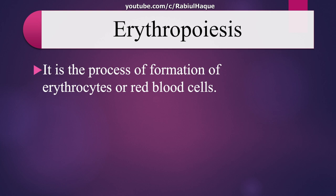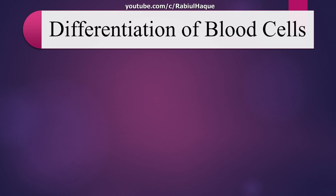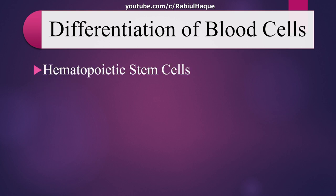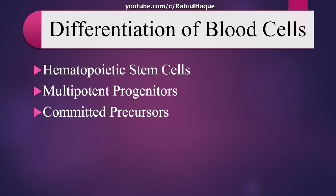One thing you have to remember: all blood cells have a common origin from hematopoietic stem cells. Those hematopoietic stem cells are often referred to as pluripotent cells because of their potential to become differentiated into any type of blood cell. From those hematopoietic stem cells, we get multipotent progenitors, and from those multipotent progenitors, we get either lymphoid or myeloid precursors — these are known as committed precursors.